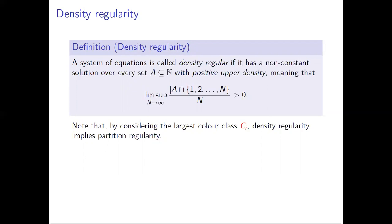There is another form of regularity that we are interested in, called density regularity, and essentially this says that the system of equations has solutions over every large set. More precisely, we refer to a system of equations as being density regular if it has solutions over every set of positive upper density, and we also require that the solution we find is non-constant. A set has positive upper density if the lim sup shown here is positive. If you finitely color the positive integers, one of the color classes must have positive upper density — in particular its density is at least 1/r where r is the number of colors.